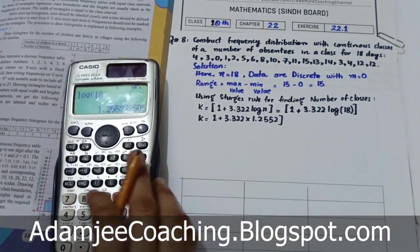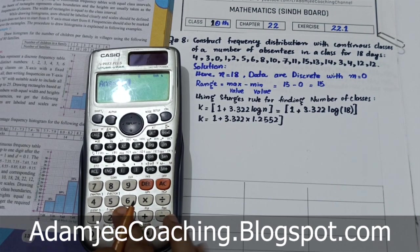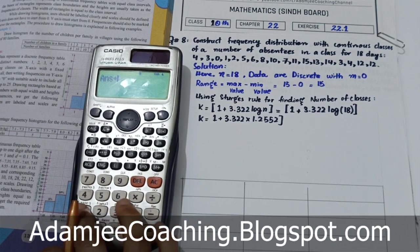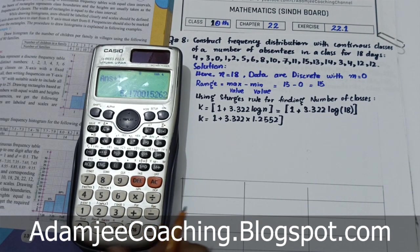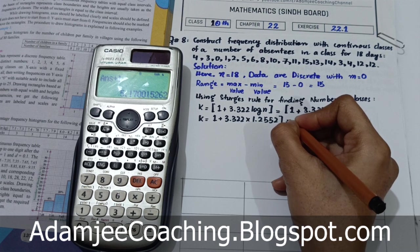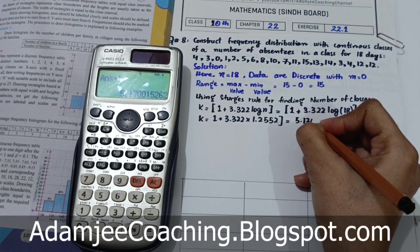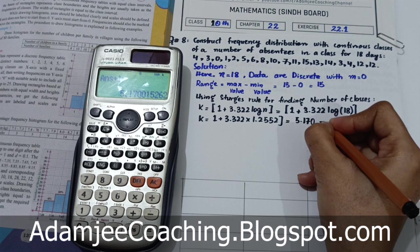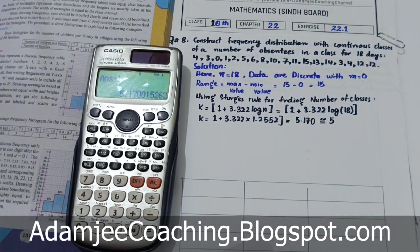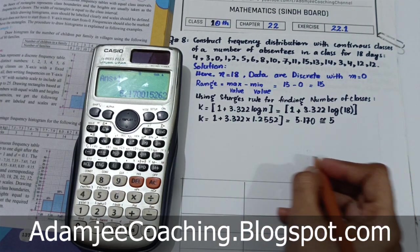3.322 ko 1.2552 se multiply karke 1 add karenge, toh aata hai 5.170. Approximate karke aapke paas aa gaya 5. Toh classes aapke paas approximately 5 honge.